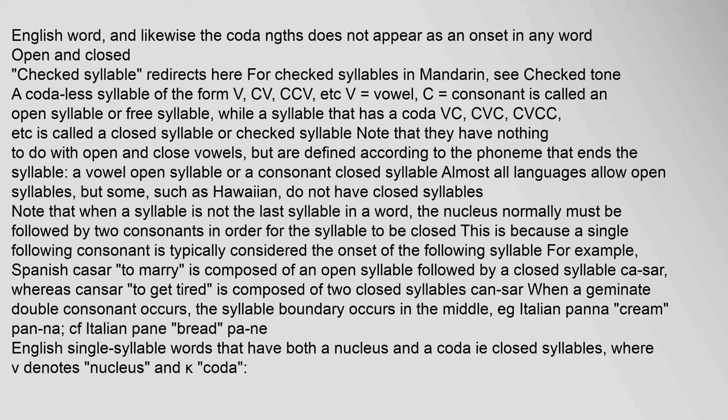A coda-less syllable of the form V, CV, CCV, etc. is called an open syllable or free syllable, while a syllable that has a coda (VC, CVC, CVCC, etc.) is called a closed syllable or checked syllable. These terms have nothing to do with open and close vowels — they are defined according to the phoneme that ends the syllable: a vowel (open syllable) or a consonant (closed syllable). Almost all languages allow open syllables, but some, such as Hawaiian, do not have closed syllables.